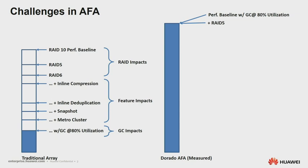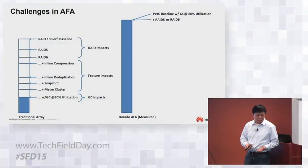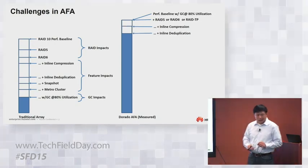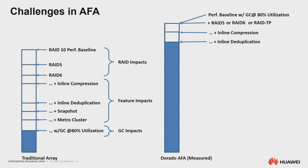When we look at our baseline, our baseline is with 80% space utilization and with GC — garbage collection, meaning the SSD internal GC — kicked in. We're also using our redirect-on-write so that we don't suffer any performance loss with RAID 5, RAID 6, or RAID TP — TP stands for triple parity. After we add inline compression, we do have overhead. When we add inline deduplication, also a little bit overhead. Snapshot is free. And metro cluster, a little overhead. These numbers are relative to each other.